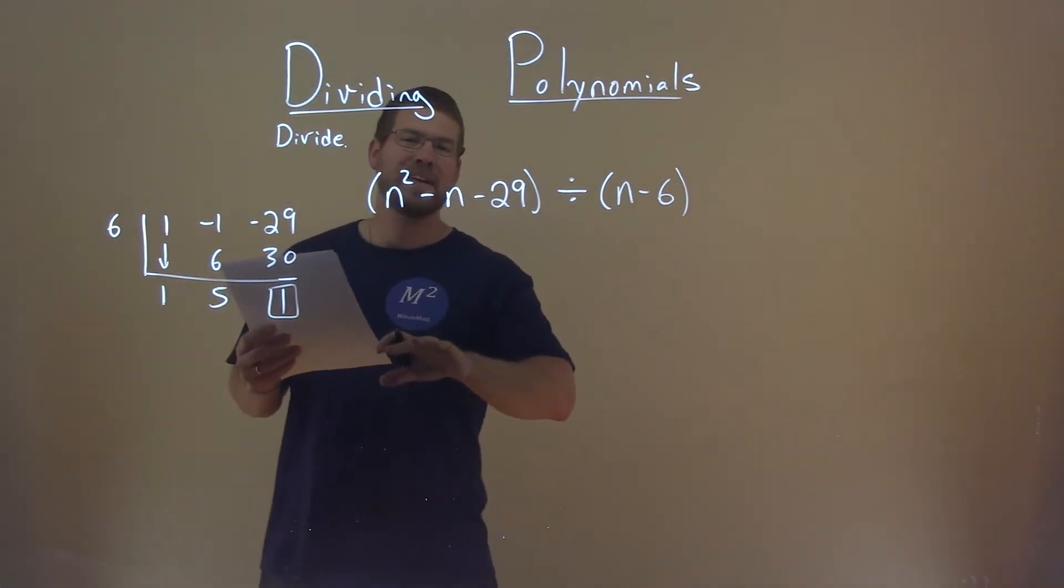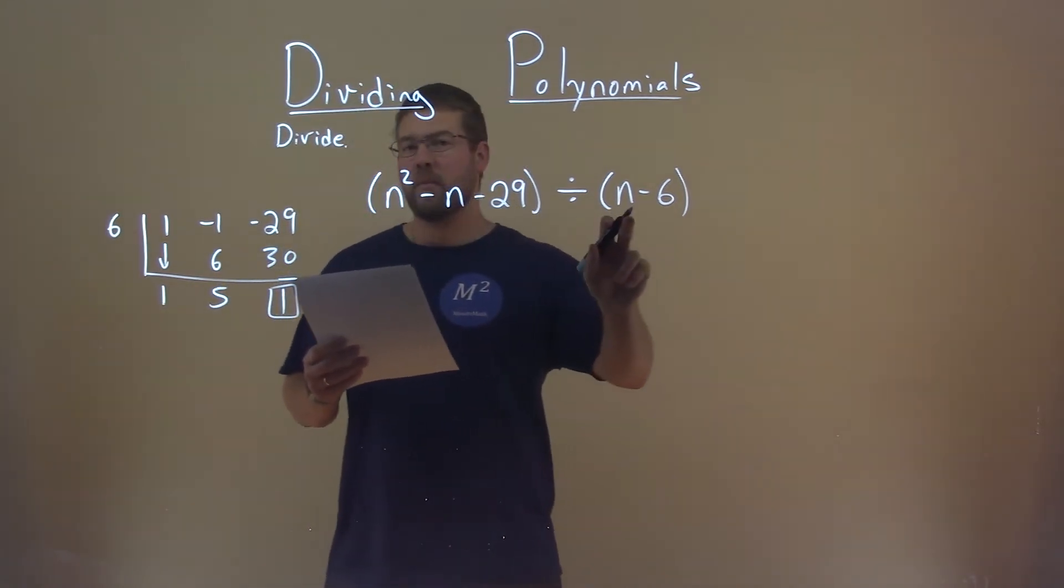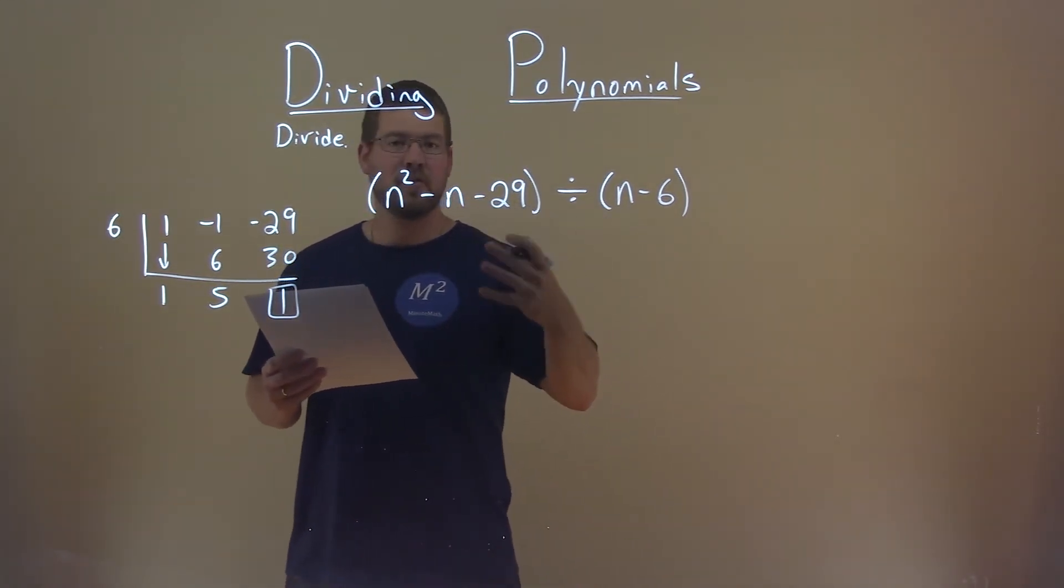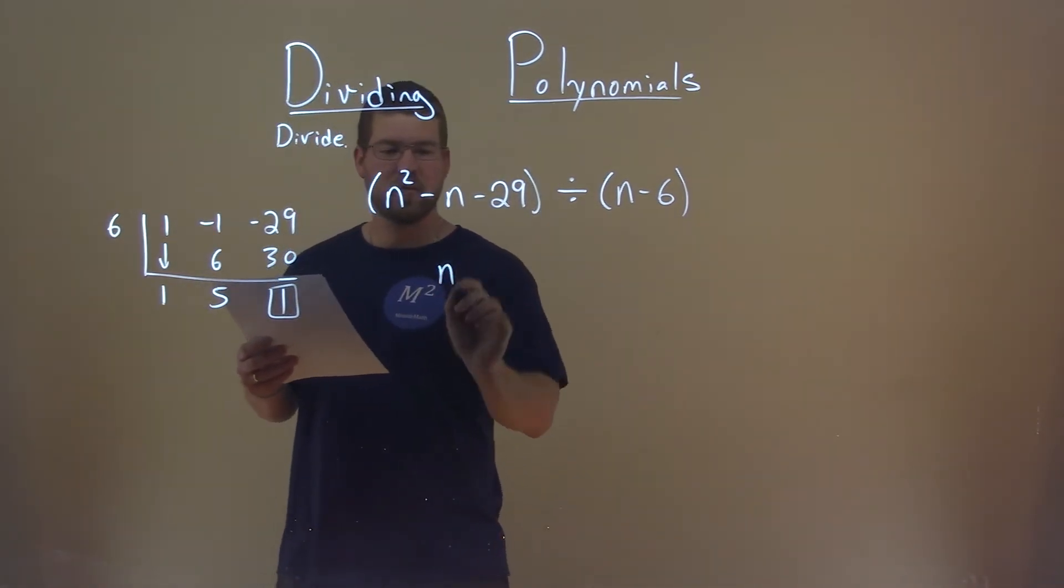So now we have the information, we need to translate it back into our variables. We have an n squared divided by an n, so we're going to start with just 1n. That's a coefficient right here, 1n, so let's write 1n here.